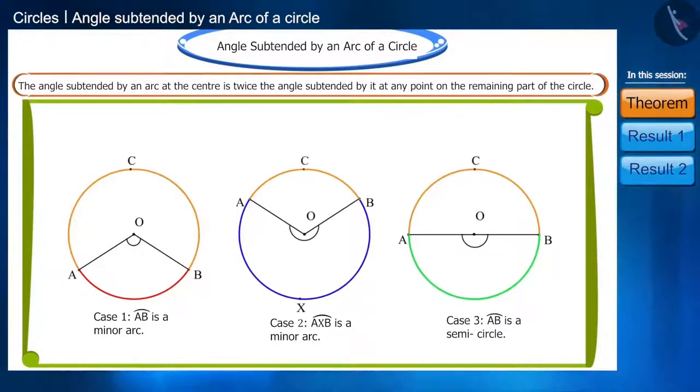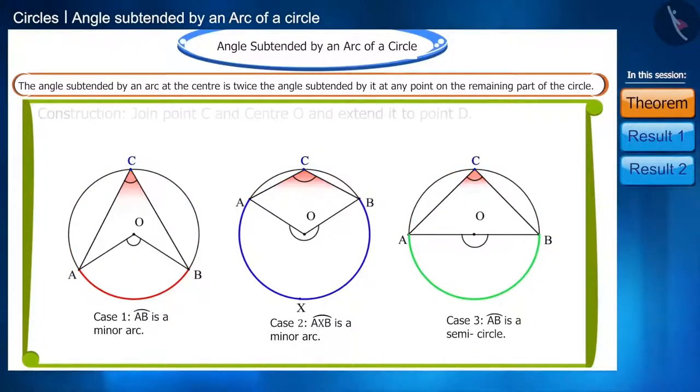Take a point C on the remaining part of the circle. Now connect both point A and B to the point C. We get the angle subtended by arc AB at point C.